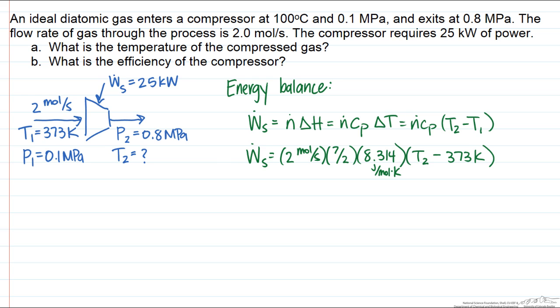We leave the outlet temperature as an unknown, and we can then solve for it as the only unknown in this equation. And of course the shaft work is equal to 25,000 watts, or 25,000 joules per second. Solving this simple equation, we find that the outlet temperature is equal to approximately 800 Kelvin.